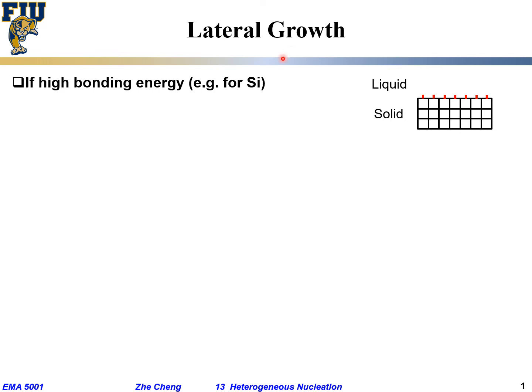On the other hand, we would have so-called lateral growth. Lateral growth comes from a system where we have solid on one side and liquid on the other side, and it would happen for a system with high bonding energy.